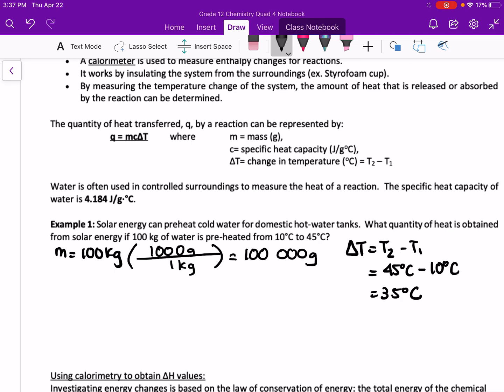We want to know the heat obtained from solar energy at this mass and temperature, so we're going to use the equation: heat equals mass times specific heat capacity times change in temperature.